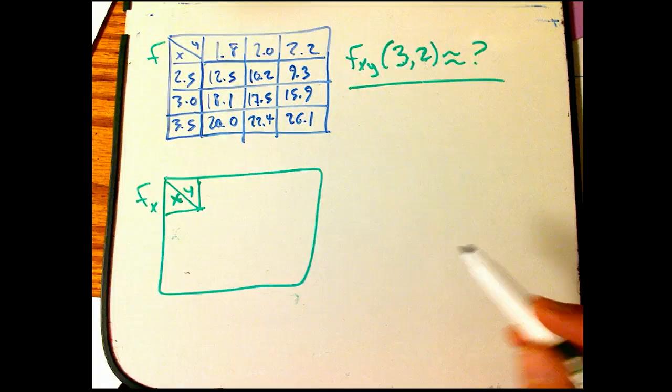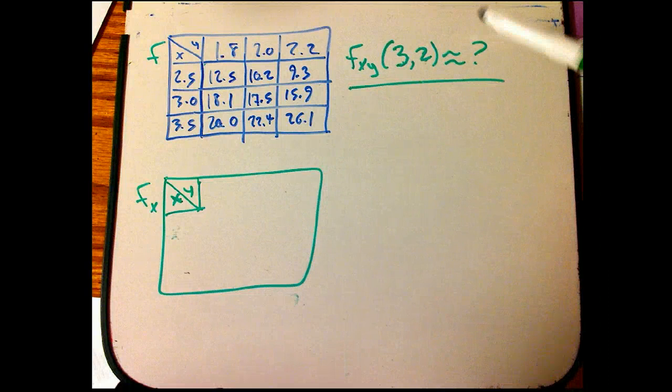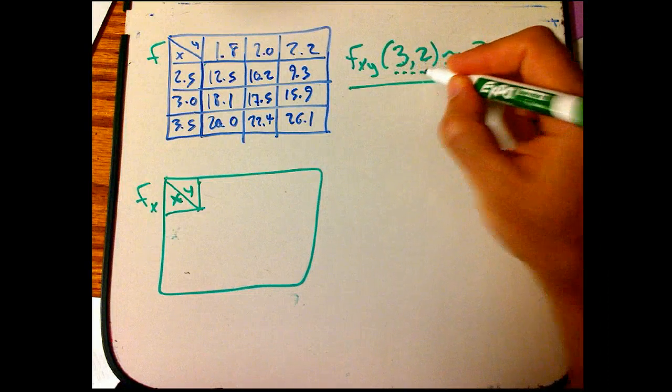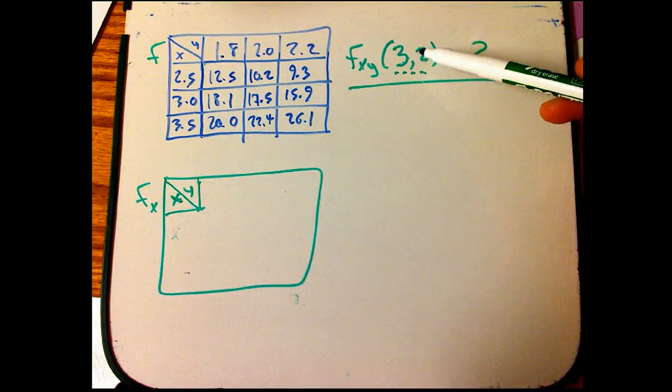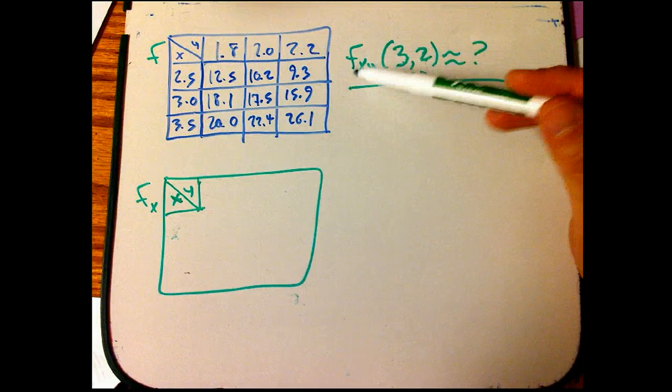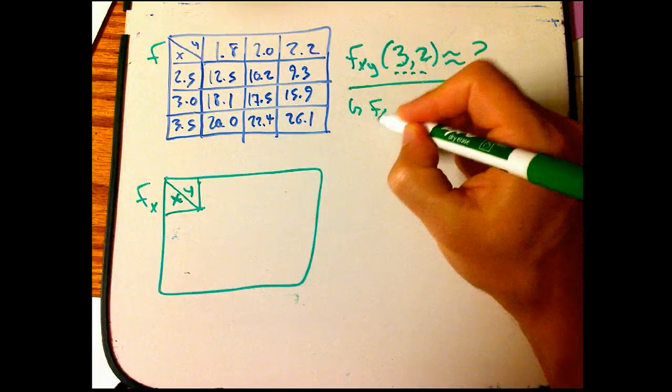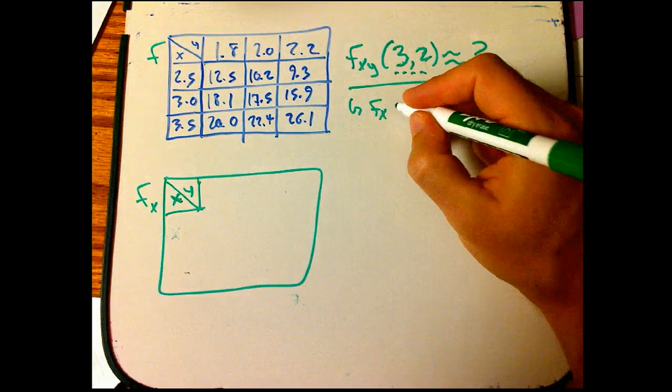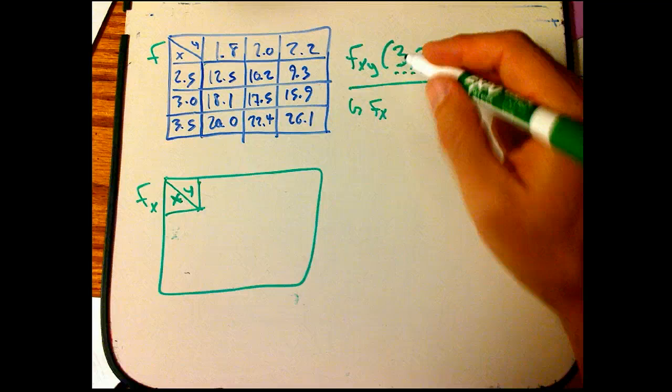Now what values am I going to need for that? We want to remember good ways of taking tabular derivatives. I'm going to want to look at the function fx, and once I get it, I don't need to look at it for any other values but x equals 3.